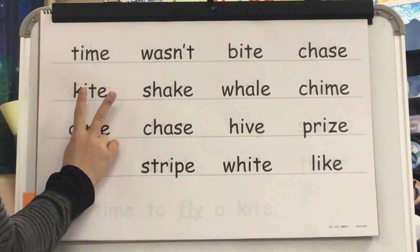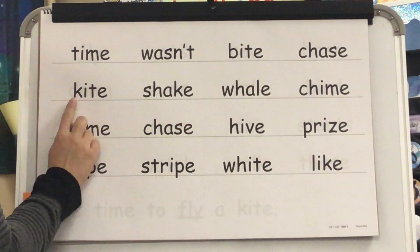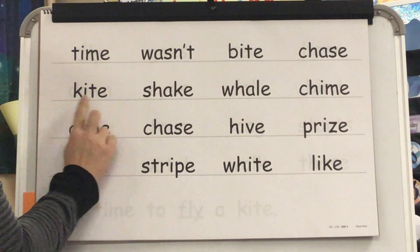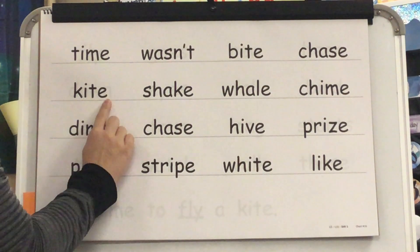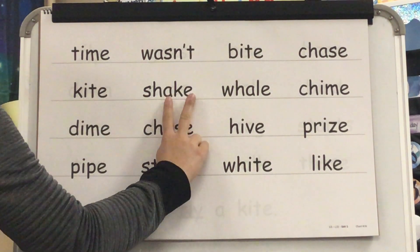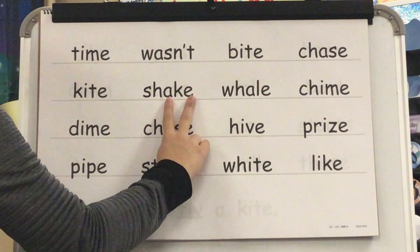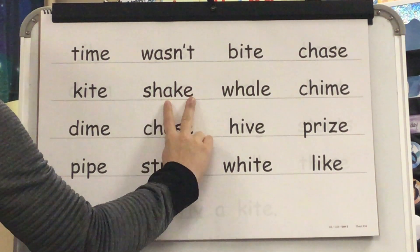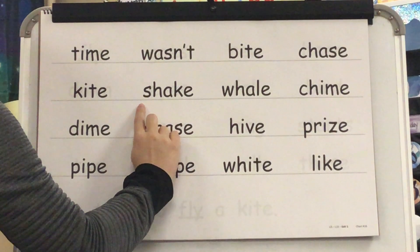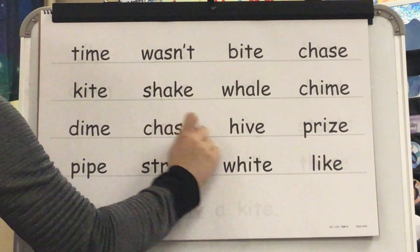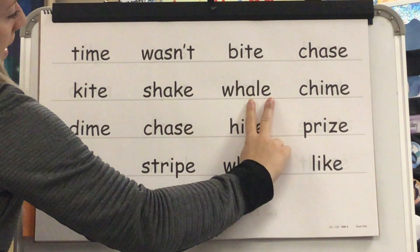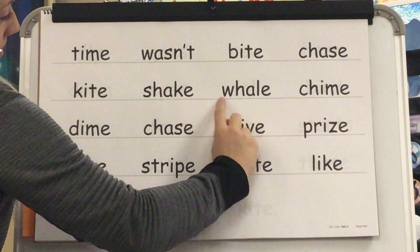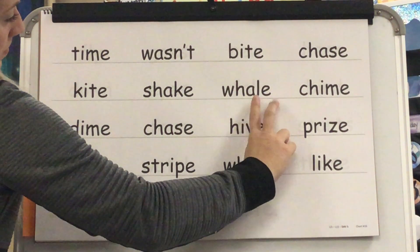Sound: I. Blend: K. I. Word? Kite. Sound: A. Blend: Sh. -ake. Word? Shake. Sound: A. Blend: Wh-ale. Word? Whale.